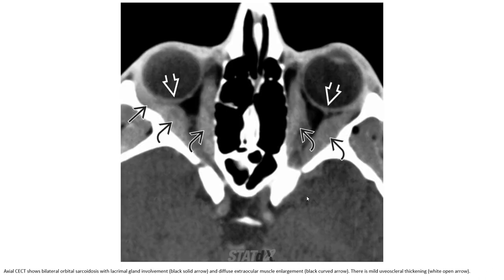This is the Axial Contrast Enhanced CT showing bilateral orbital sarcoidosis with lacrimal gland involvement. It shows extra-ocular muscle enlargement. This is uveo-sclerotic thickening.